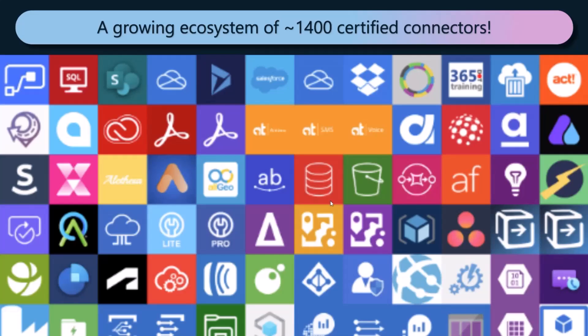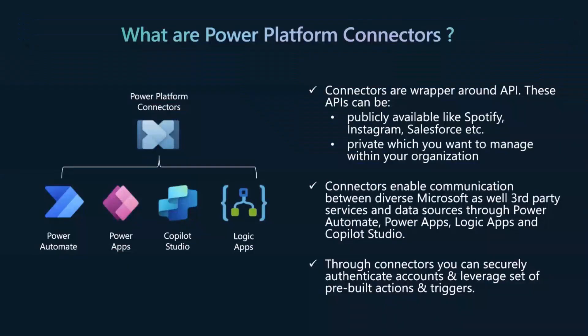So these are all Power Platform connectors that have been used historically for Power Platform. And when I say that, what I mean is you have Power Apps, Power Automate, and now Copilot. And essentially, just to give you a quick definition of what Power Platform connectors are: it's basically a wrapper around an API. So if you have an API that you want to use as a connector in any of these Power Platform products, that's what you build using our authoring tools. Now, why a connector? Why the wrapper?